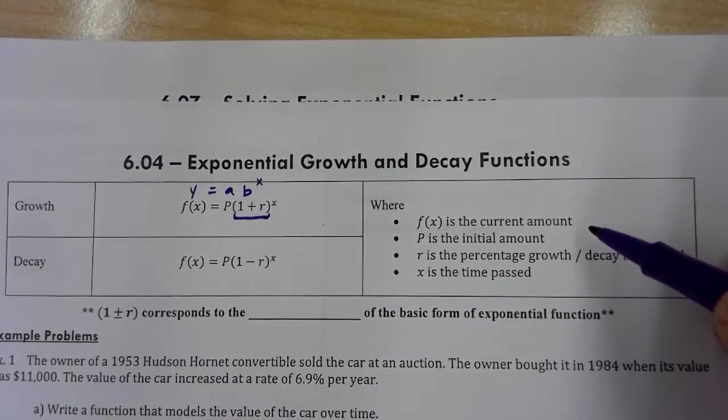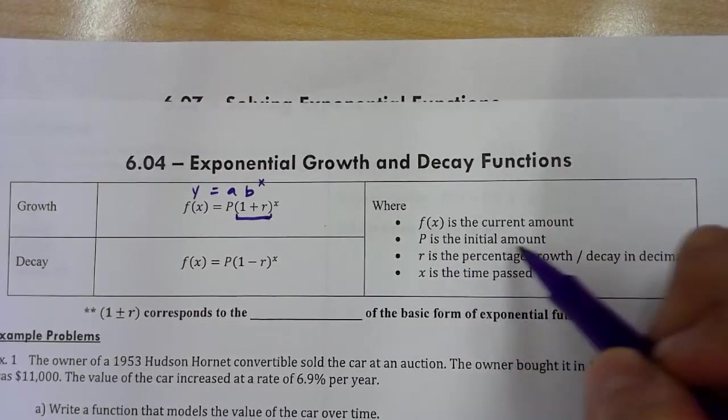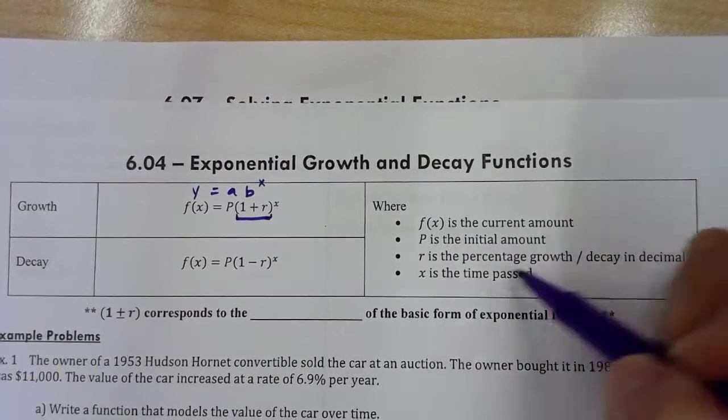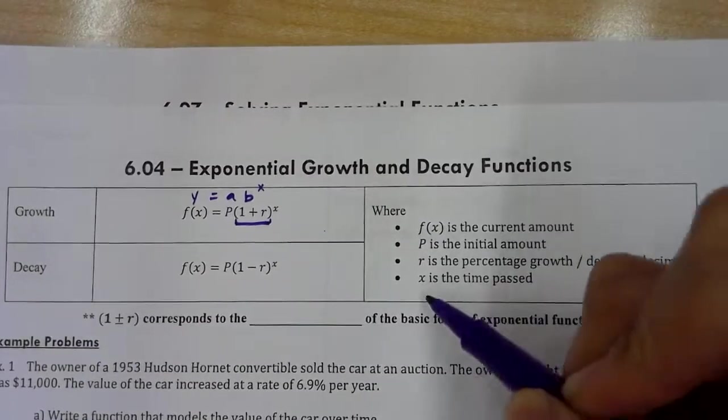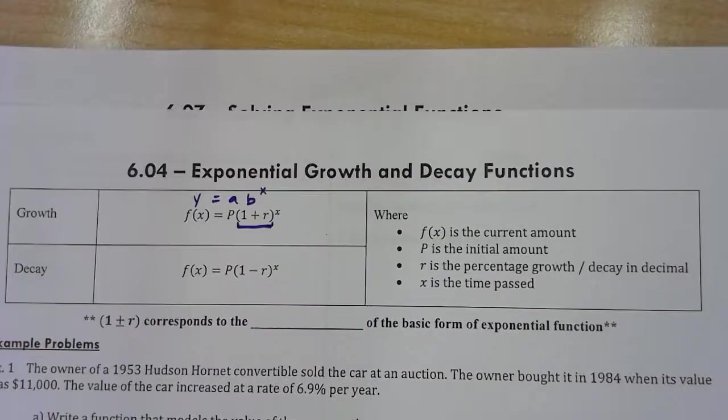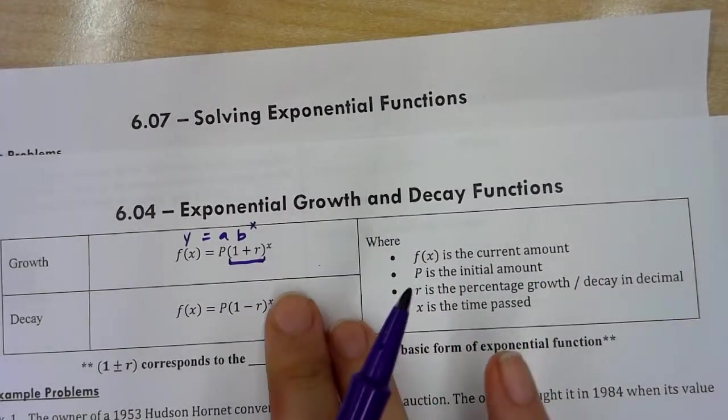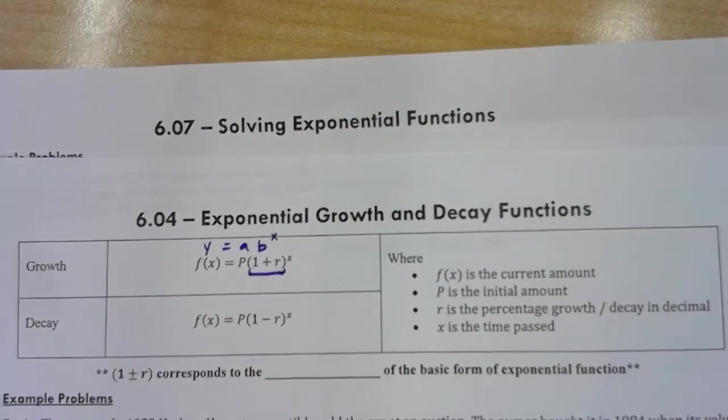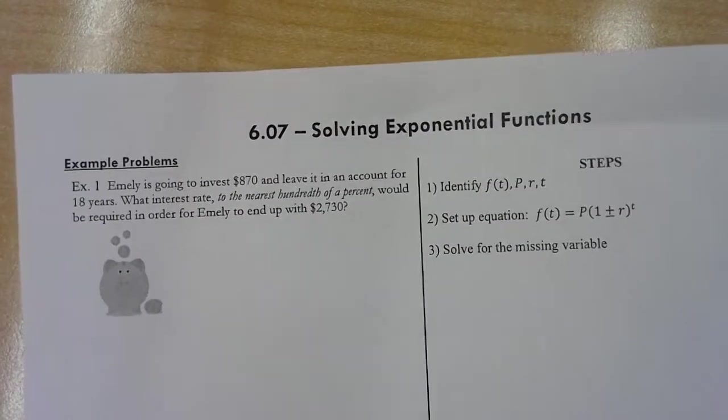So here we define that f(x) is the current amount, P is the initial amount, r is the percentage growth or decay in decimal, and then x is the time passed. So we are going to use this definition, and scholars, you do have to memorize this to solve some exponential functions.